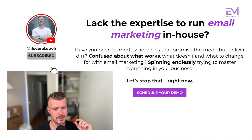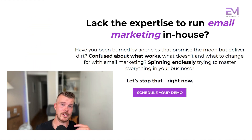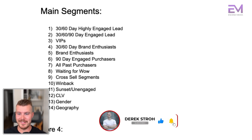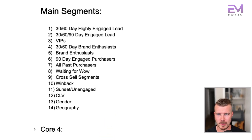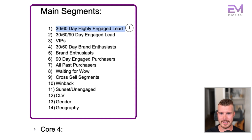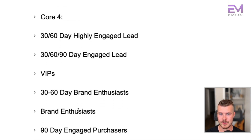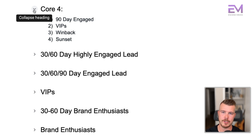This was the second video in the segmentation series. The next one will cover the exact segments you want to build out. Now, the main segments we're looking at are: a 30-60 day highly engaged lead, a 30/60/90 day engaged lead, VIPs, 30-60 day brand enthusiasts, brand enthusiasts, 90 day engaged purchasers, all past purchasers, waiting for wow, cross-sell segments, win back, sunset or unengaged segment, customer lifetime value, gender, and geography. The core four to start with are: 90 day engaged, VIPs, win backs, and sunset.